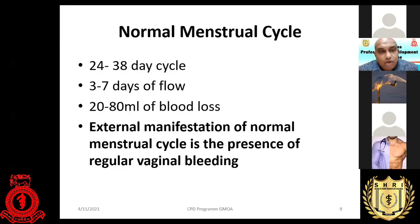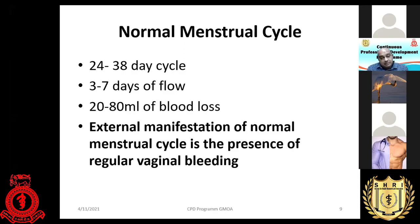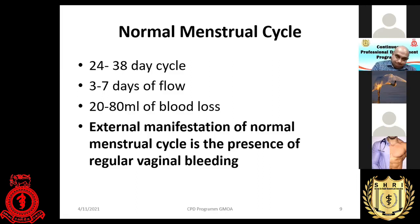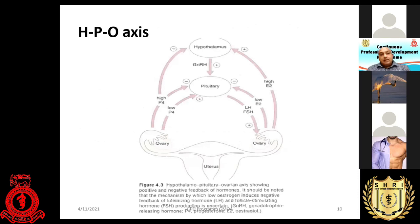According to the latest classification, a normal menstrual cycle is 24 to 38 days. A normal flow lasts three to seven days, and blood loss of 20 to 80 ml per menstrual period is considered normal. Basically, normal menstruation is an external manifestation of a normal menstrual cycle — the presence of regular vaginal bleeding.